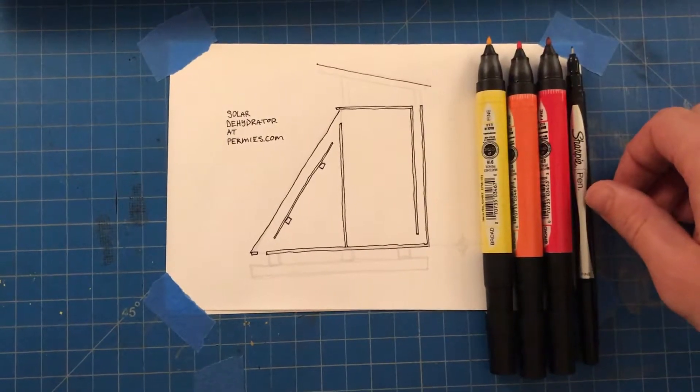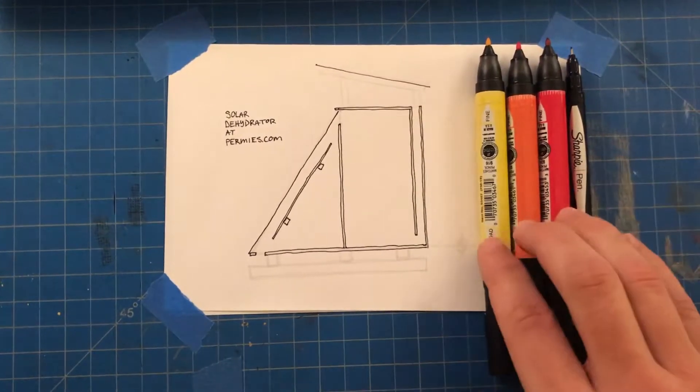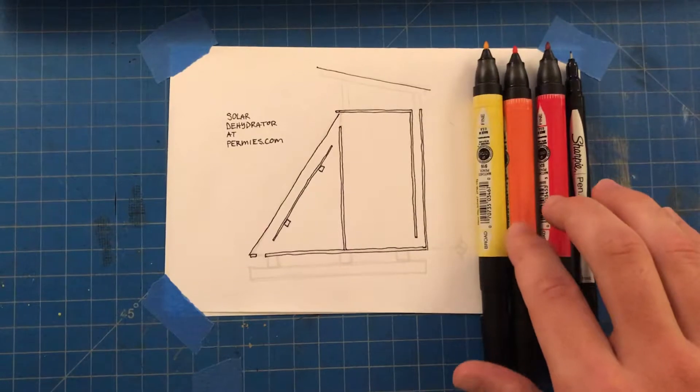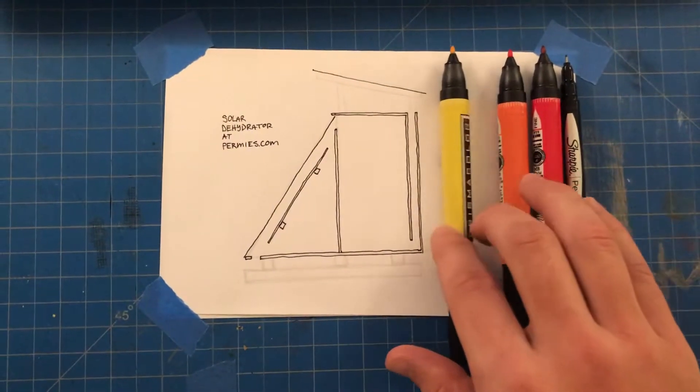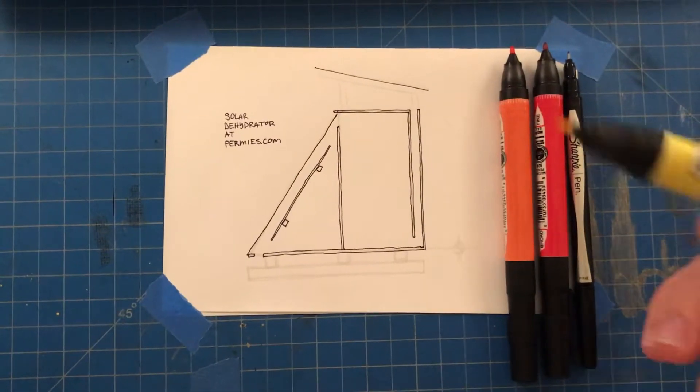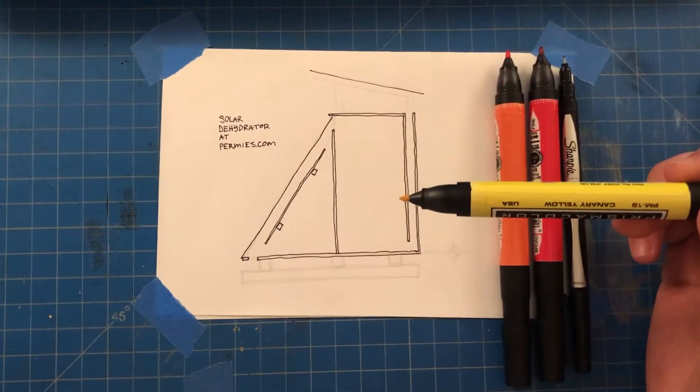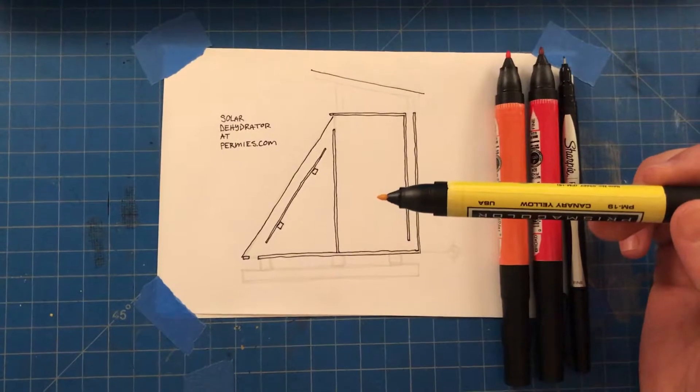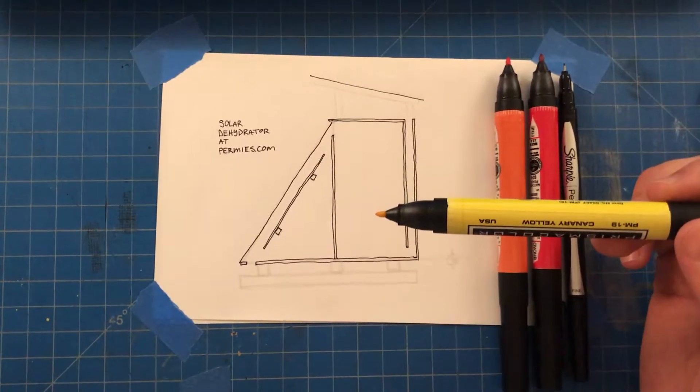So I've got my favorite tools here and I've got these same colors that he used, and I want to explain how heat flows through a solar dehydrator, specifically the Missoula 1 model that I have posted to permies.com.